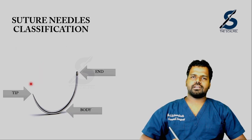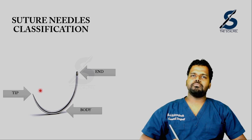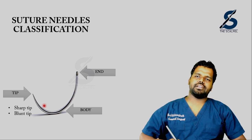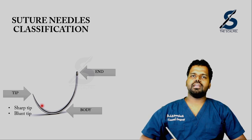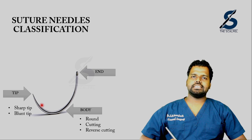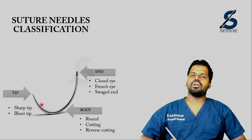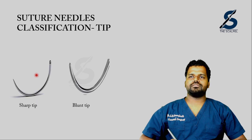Coming to the classification: the needle can be classified based on the tip, body, and end. Based on the tip, it can be classified into sharp tip and blunt tip. Based on the body, it can be classified into round body, cutting, and reverse cutting. Based on the end, it can be classified into closed eye, French eye, or a swaged end.